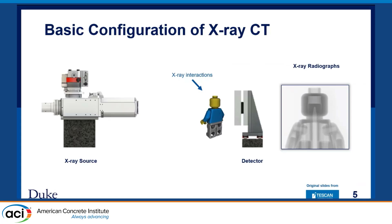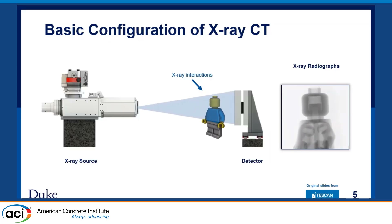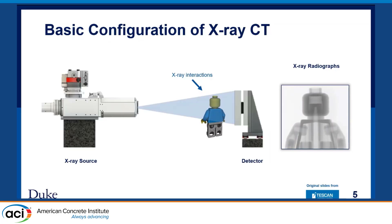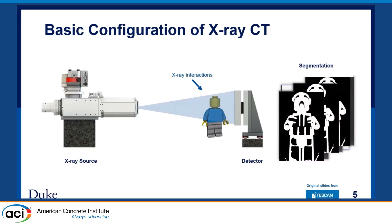How does the macro CT scan work? We have the source and the detector, with the object plane in the middle. The object plane rotates during scanning. The X-ray source spreads out photons that go through the object, giving us an X-ray radiograph. From that, we can obtain individual slices of the CT scan, and then we perform segmentation based on those slices.